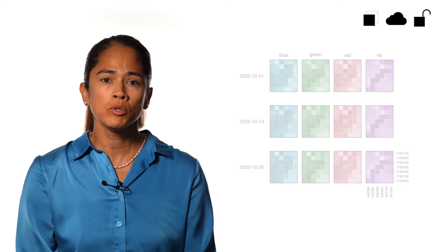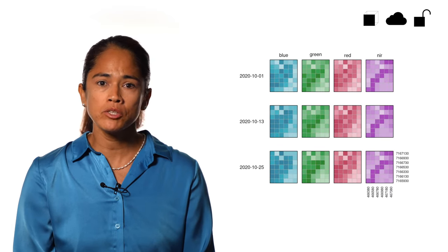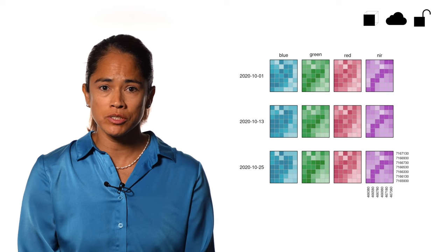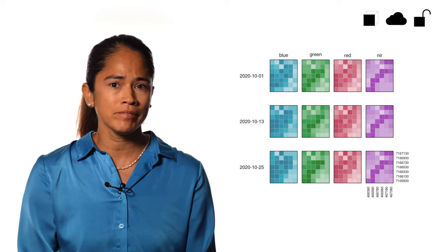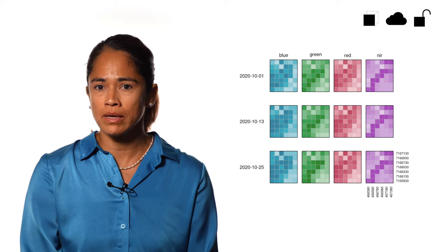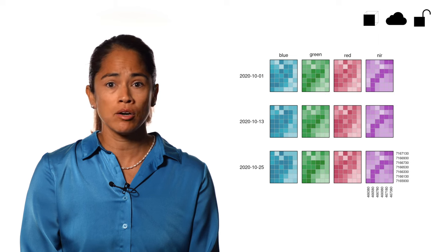In EO, we deal with multidimensional data. Optical satellite images usually carry information in several dimensions: in space in terms of latitude and longitude, in time when an acquisition was made, and in the spectral bands that are available.